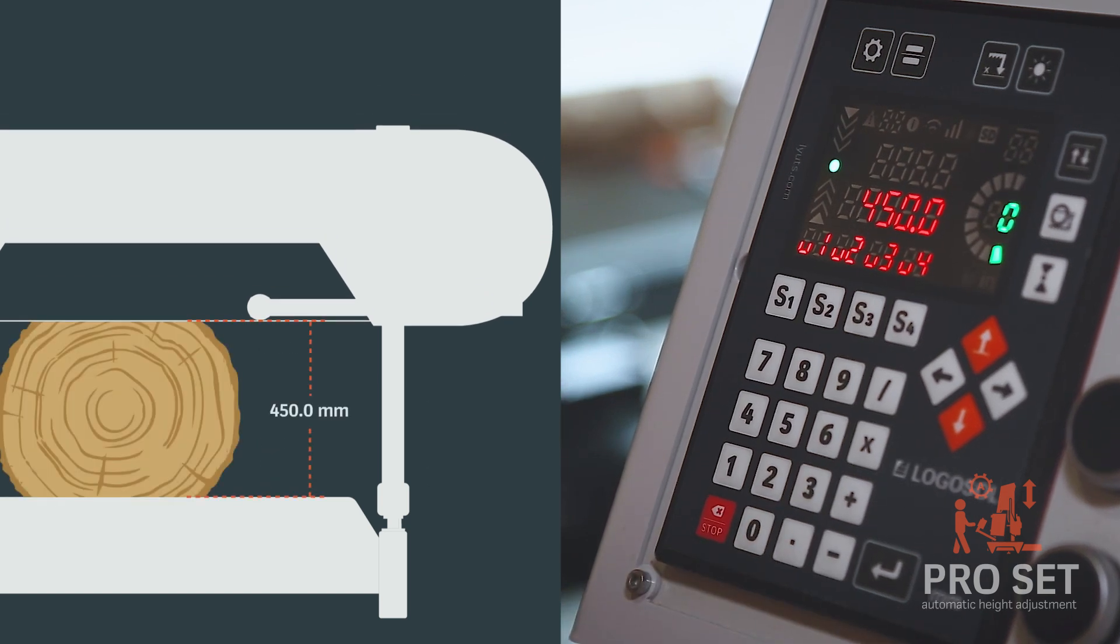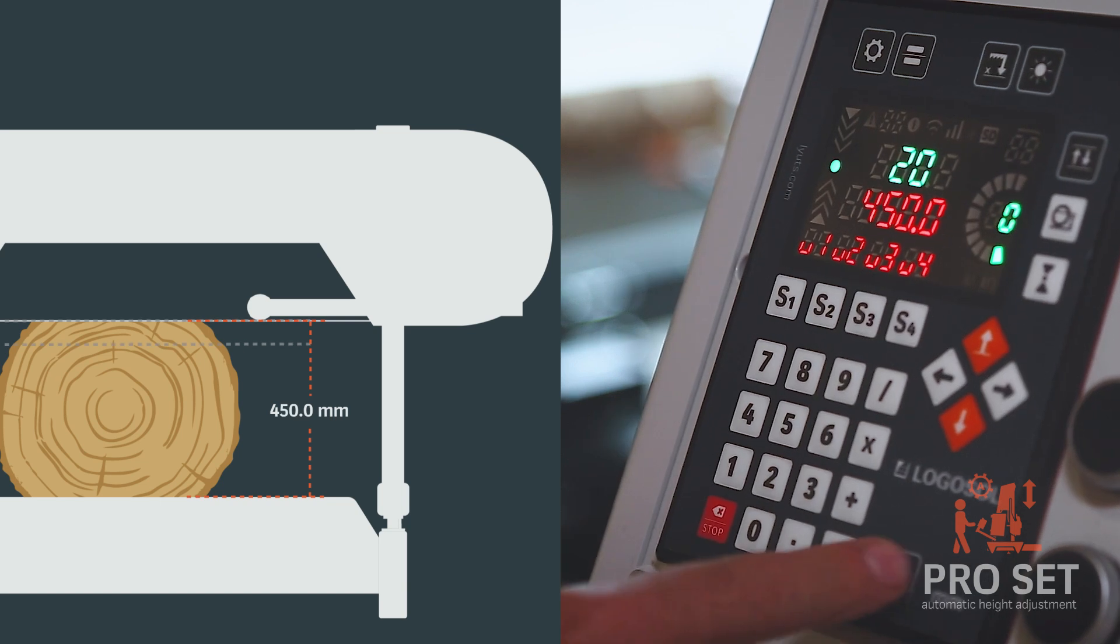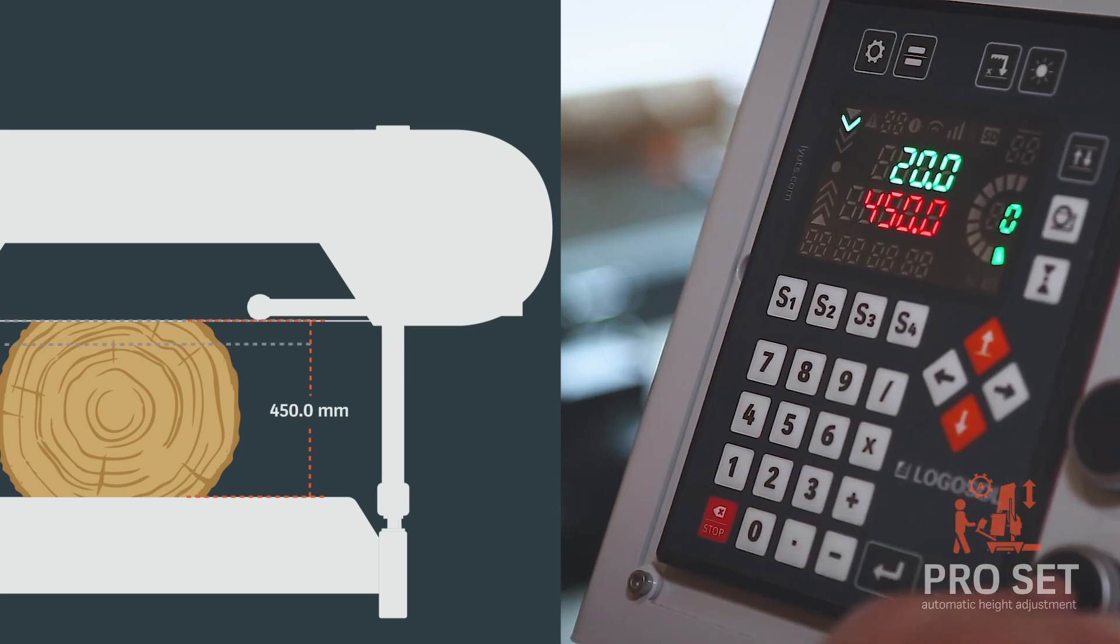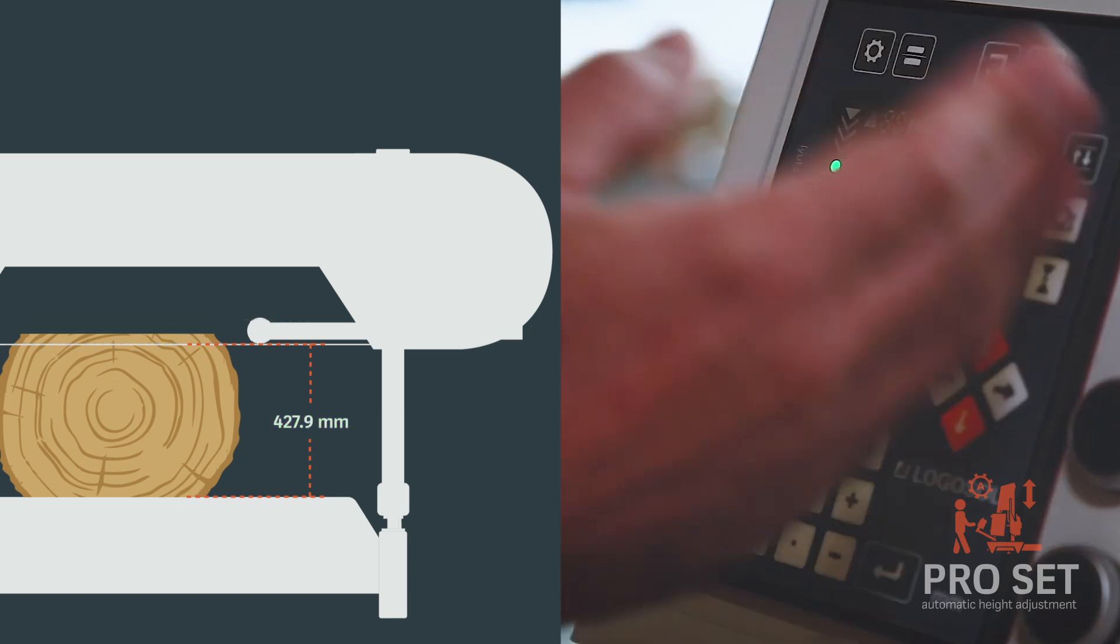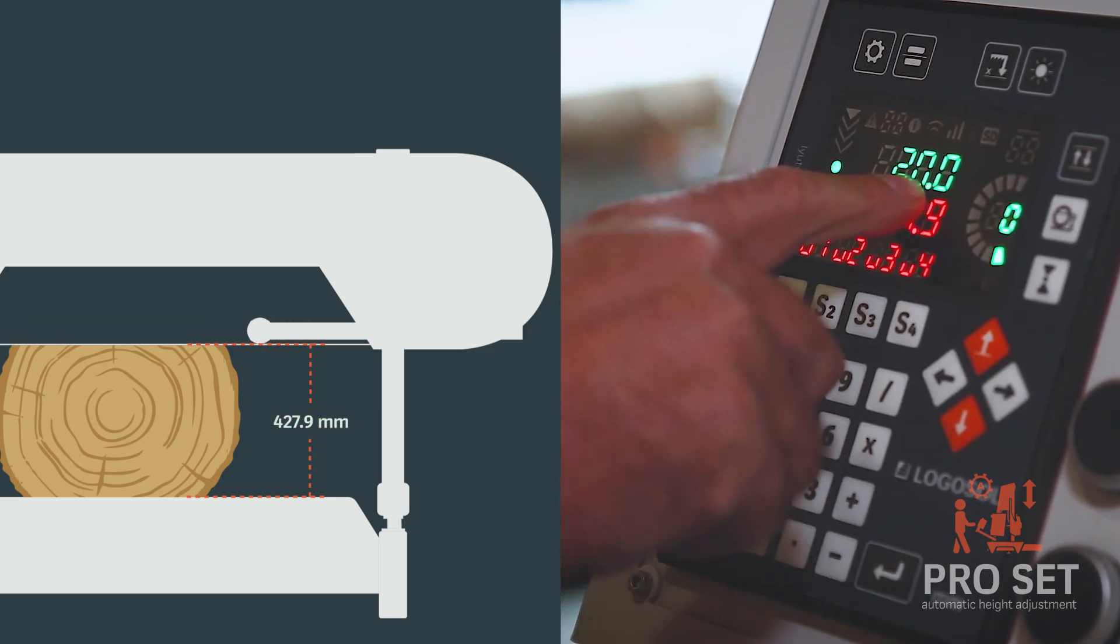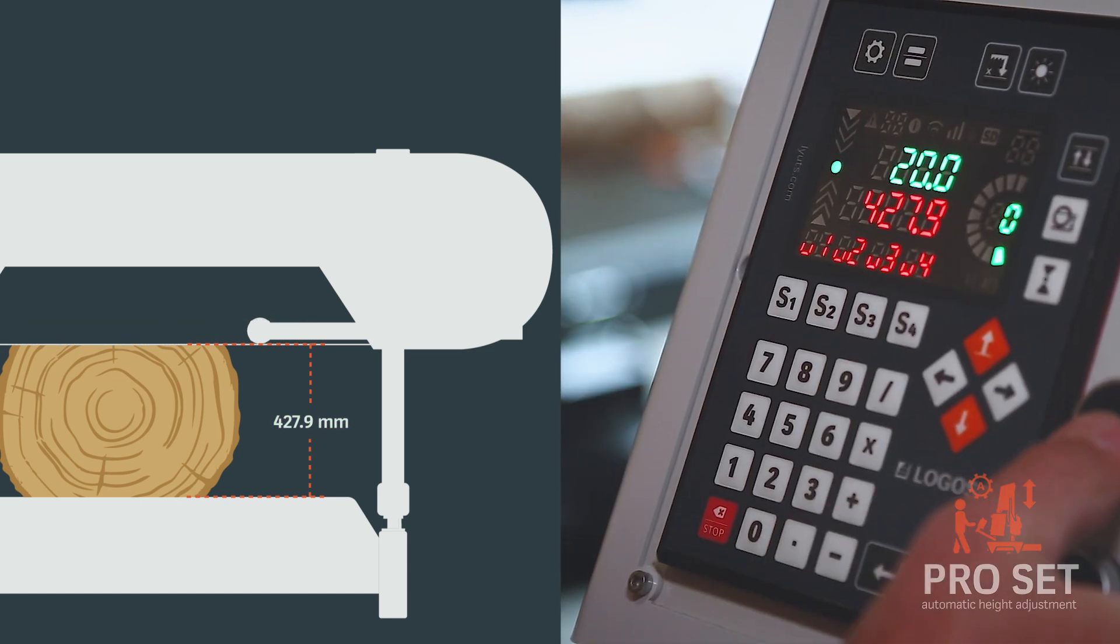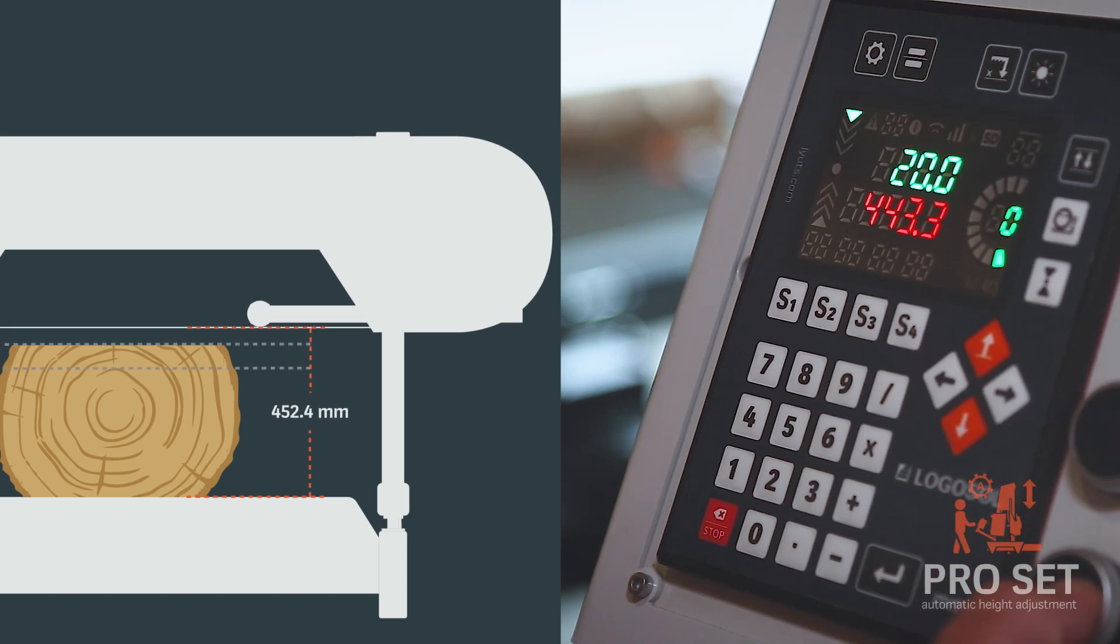Of course, you can do single boards. If you want, you can say, okay, we want to have 20 millimeter boards. Go down. This includes the curve. And if you don't change these 20 millimeters, you go up after the cut and go down 20 again.